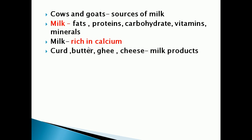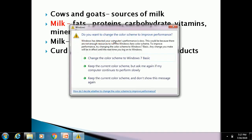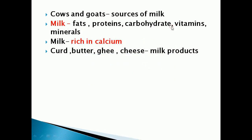Some of the milk products — examples are curd, butter, ghee, and cheese. We will get some important milk products from milk. These milk products which we get from milk are called dairy products. What is meant by dairy products? The products which we get from milk are called dairy products.